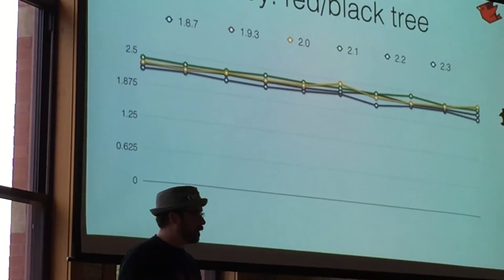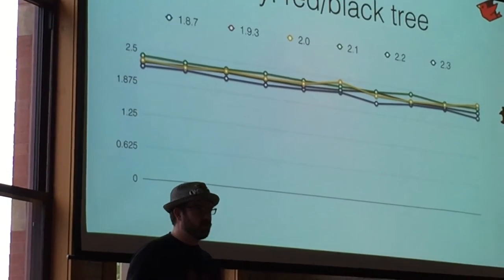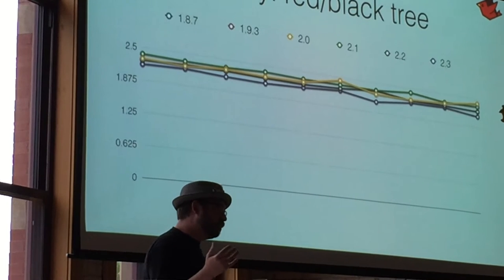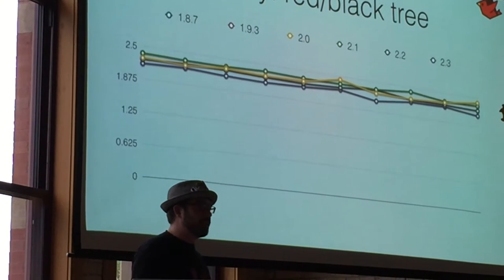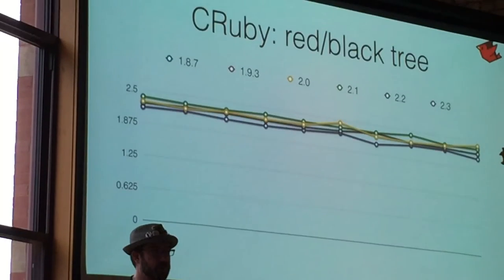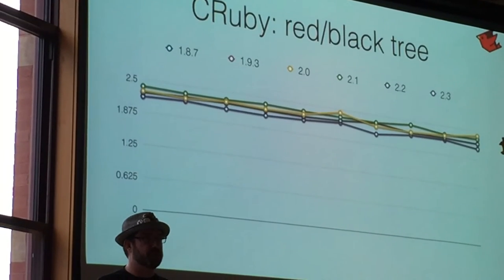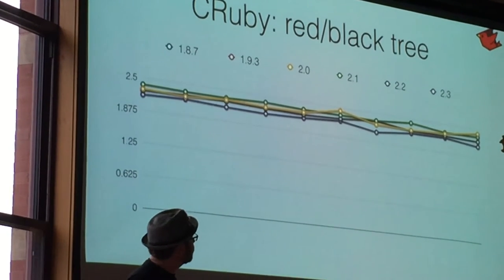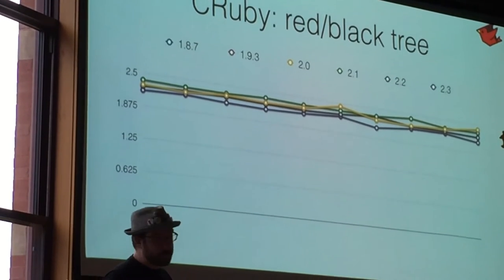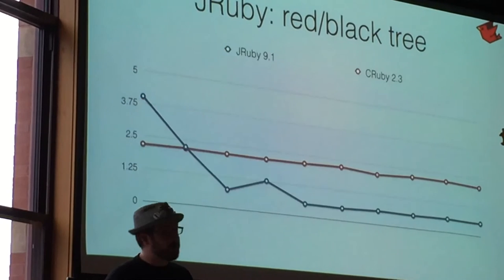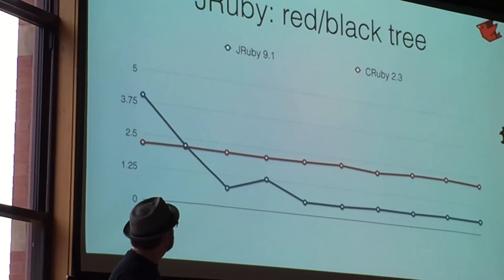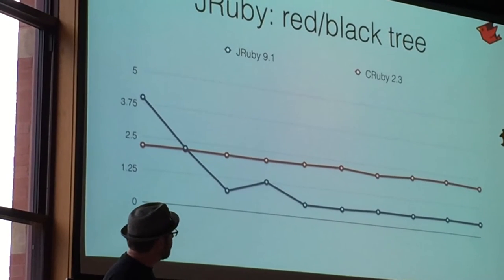Not really a macro benchmark, but probably fairly indicative of writing everything in Ruby. It's a data structure, a fairly common data structure written in Ruby. And this is the performance you get at CRuby.